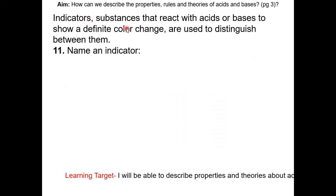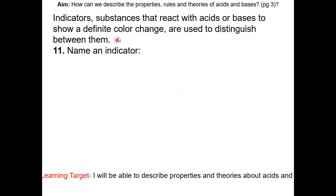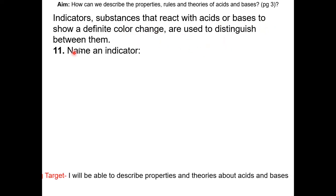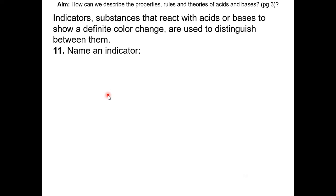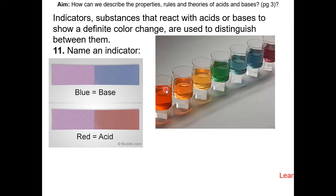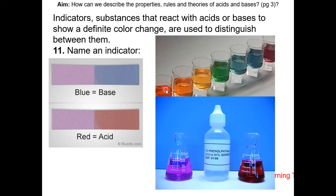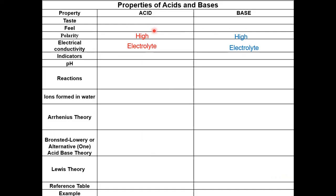Indicators are substances that react with acids or bases to show a definite color change, and they are used to distinguish between them. Here are some examples of indicators we have used in the past and will use in the future: litmus paper, the universal indicator, and phenolphthalein. Let's summarize the properties of acids and bases that we discussed.